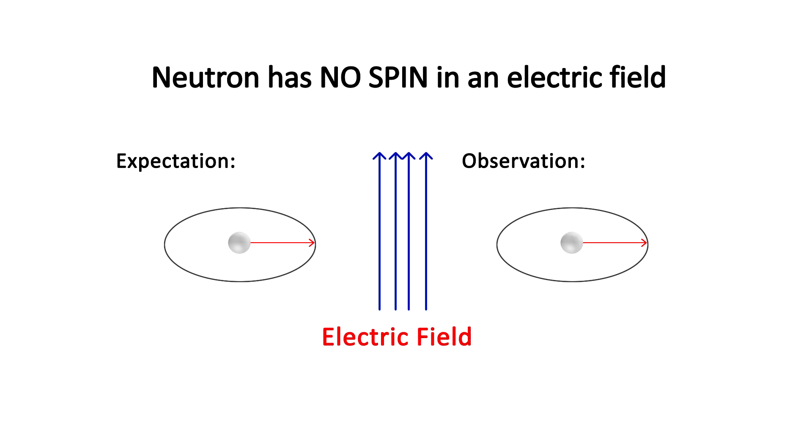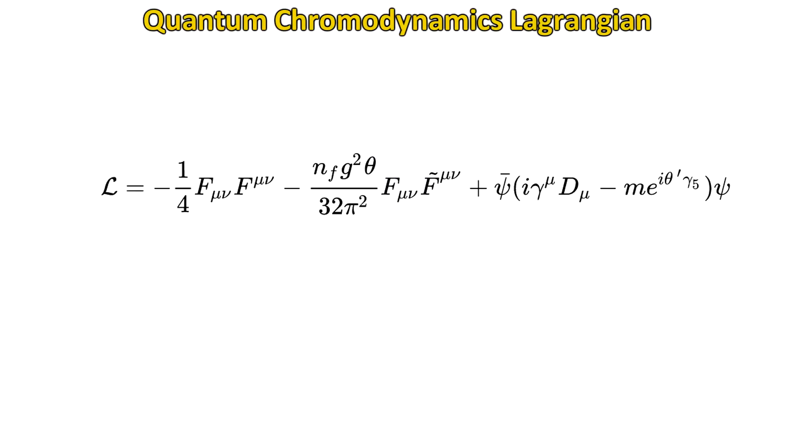But the neutron, according to theory, should also spin if exposed to an electric field. However, for some reason, it does not. No one knows why. And this is the problem. The lack of spin, it turns out, is dependent on one of the fundamental constants of nature, called theta. This theta has to be zero, or close to zero, for this observation of no spin of neutrons to happen. This is one of the constants, like the gravitational constant, or the Planck's constant. But theta should vary anywhere from negative pi to pi. There's no reason that it should just happen to be zero. This seems to be a huge fine-tuning coincidence.